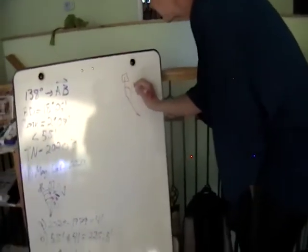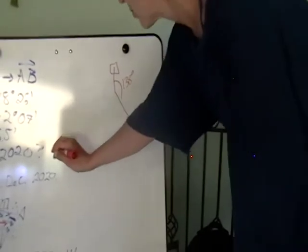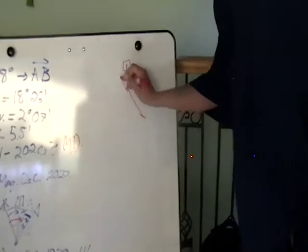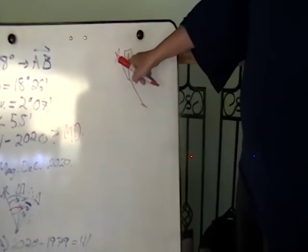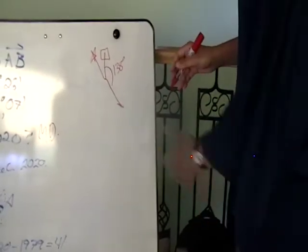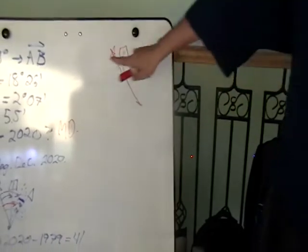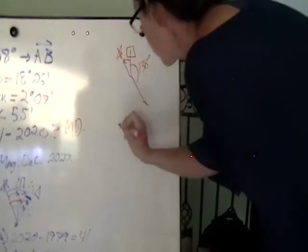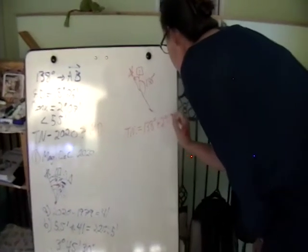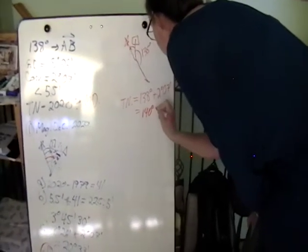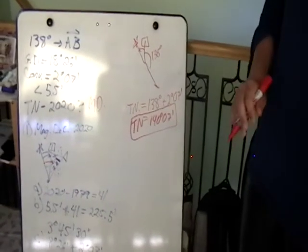Does the convergence angle change over time? No, it does not. So all we're doing is adding the convergence angle to the grid angle. My true north azimuth is going to be 138 degrees plus 2 degrees 7 minutes, which equals 140 degrees 7 minutes — that is for true north, in both 1979 and 2020. It does not change.